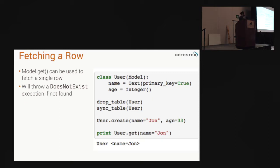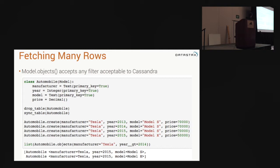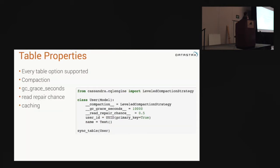For getting a single row we have model.get — it will return a single row, and if the row does not exist it will throw a DoesNotExist exception. We can also fetch multiple rows using filter, where you pass keyword arguments as a list of filters and it will construct the statement. You can also manage your table properties with this — leveled compaction is a different compaction strategy optimized for solid state drives. There's another one called date-tiered compaction, optimized for time series data and TTLs. You can put any of these on your model, and when you sync the table it will look at the table options as set up in the database and resolve any conflicts and fix the table for you.